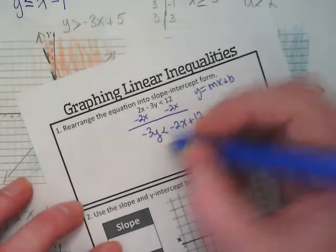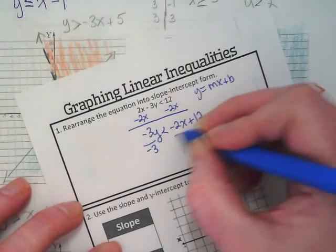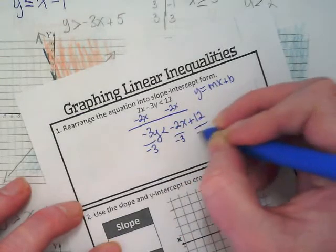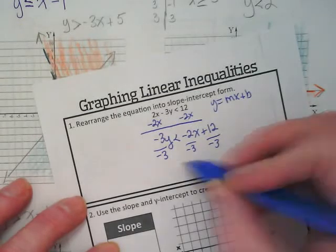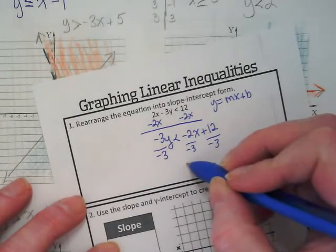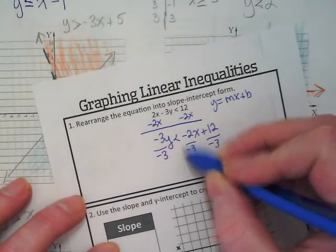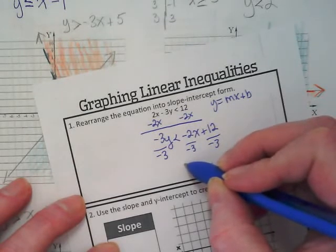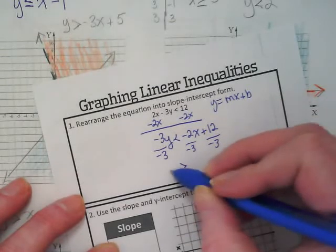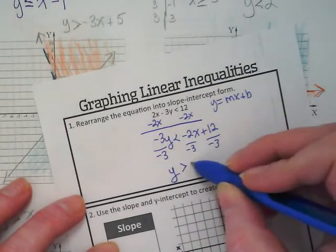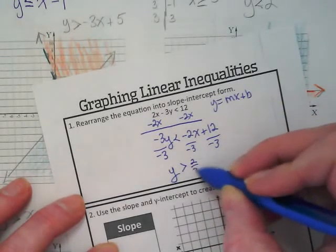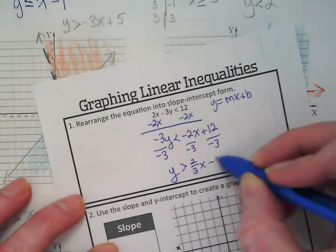If I divide by negative 3 with an inequality what's true? Go ahead and say it out loud Ty. The inequality symbol is not going to be less than anymore, it's going to be greater than. So y is greater than 2 thirds x minus 4.